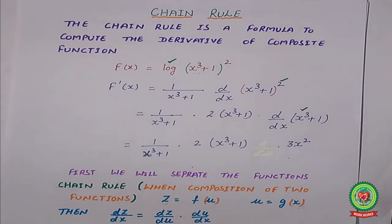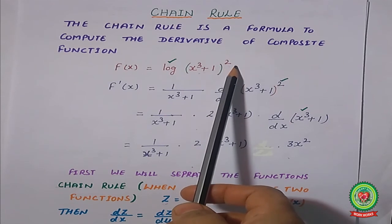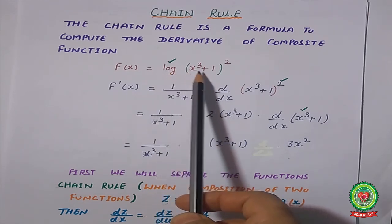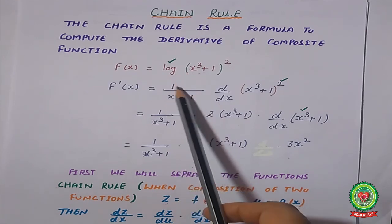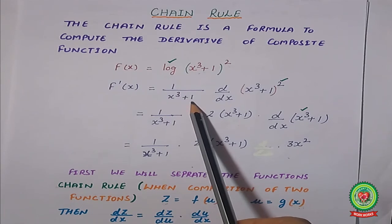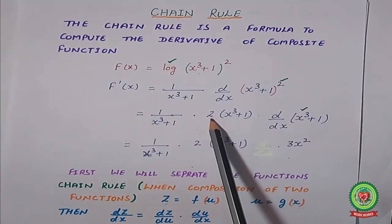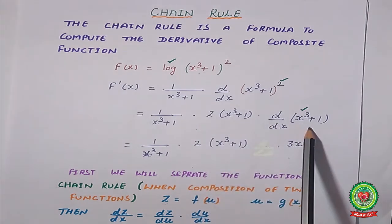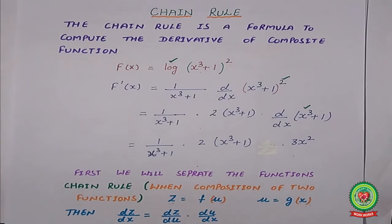Let us take one example we have already done by the previous method. Let f(x) equal to log of (x³ + 1)². This expression is already the combination of two functions — one is log, and one is a polynomial degree. According to the rule, first we differentiate the log term, which gives the reciprocal of the other term: 1 upon (x³ + 1). Then d/dx of (x³ + 1)². If the problem specifically says to solve using chain rule, then we apply the chain rule formula; otherwise you can solve by any method.